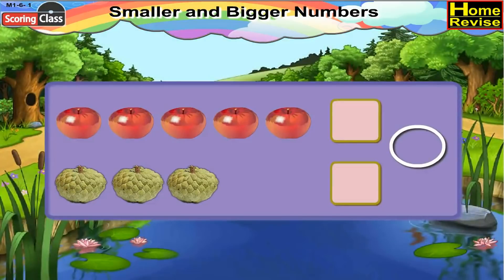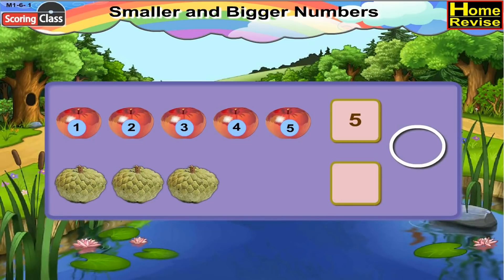First, let us count the apples. 1, 2, 3, 4, 5. There are 5 apples. So write 5 in the box.